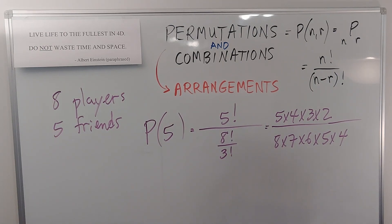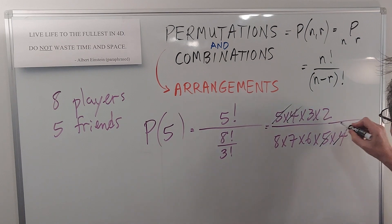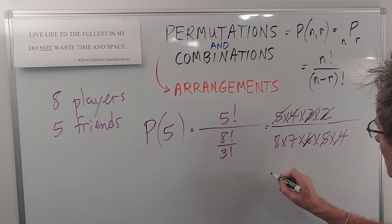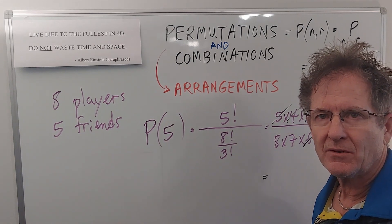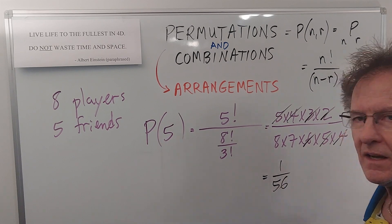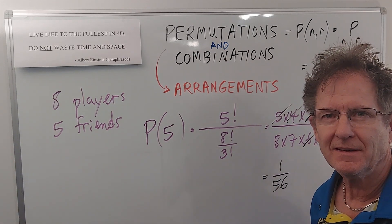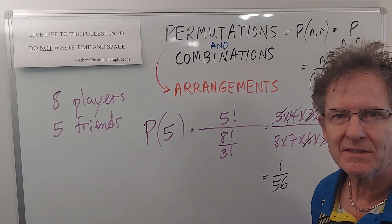So let's simplify this. We don't have to do all the calculations. The fives cancel, the fours cancel, the six cancels the three and the two. So the probability of the five players being together on the same team is only one out of 56. Good luck with that - not likely to happen. All right, so there's an introduction to permutations.